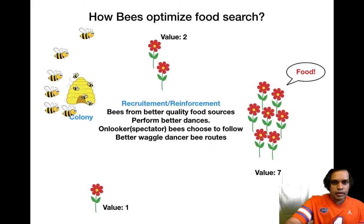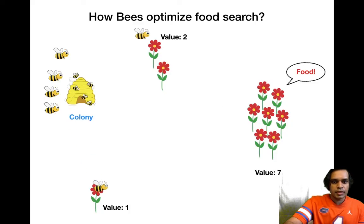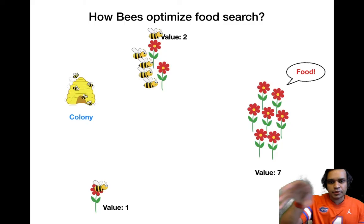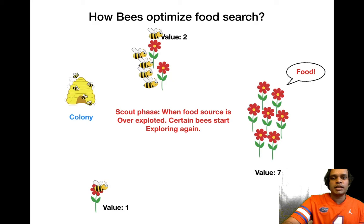The bees go back and the remaining bees go to the food source of value two. Now as you can see, all the bees are centered around value two. If there are too many bees at a source, they will not be able to exploit the food fully, so some of the bees transition back to the state of a scout and do exploring once again.